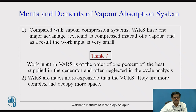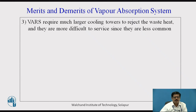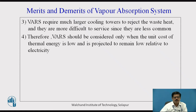VARS are more expensive than VCRS because absorption systems are complex, they occupy more space, and are bulky. So they are more expensive compared to vapor compression systems which are compact in nature. COP is much less, so they are less efficient also. Vapor absorption systems require much larger cooling towers to reject waste heat, and they are more difficult to service since they are less common. A large amount of heat is to be rejected in the condenser and absorber, so you require larger cooling towers. Vapor absorption systems are therefore considered only when the unit cost of thermal energy is low — meaning waste heat is available in large quantity, or heat is available at low cost compared to electricity.